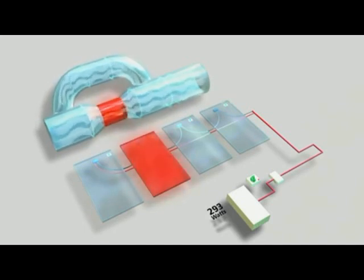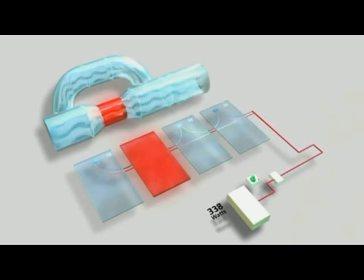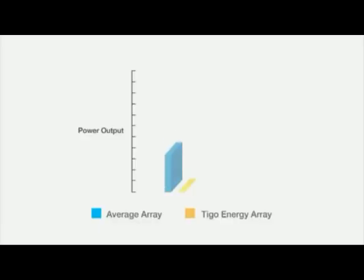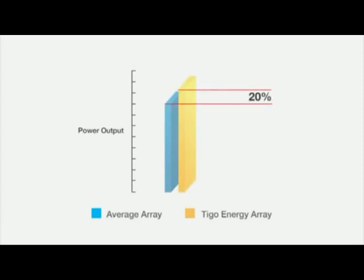The underperforming module will continue to contribute its power to the string but will not restrict the flow of the other modules. By using the Tygo Energy Maximizer to prevent underperforming modules from restricting the output of other panels, a solar array can produce up to 20% more energy.